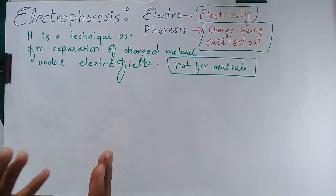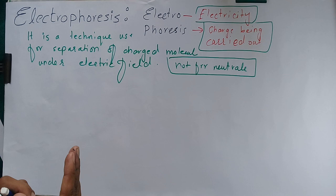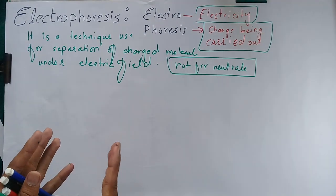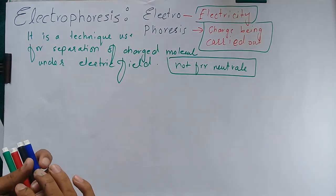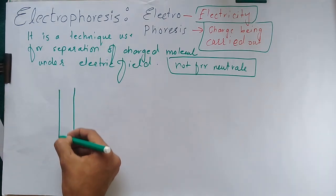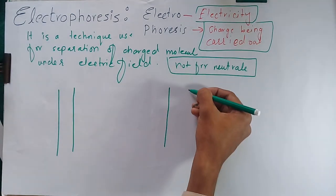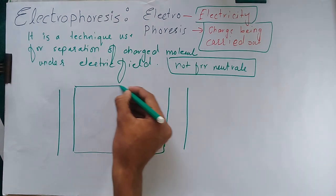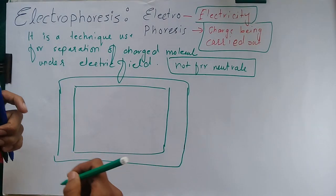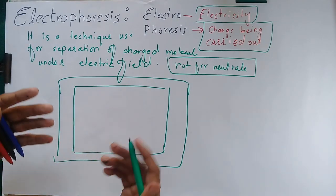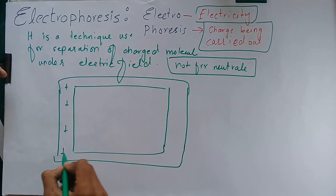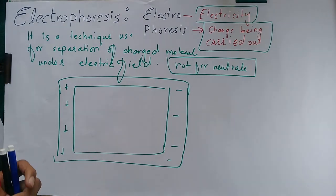Electrophoresis is a process in which we separate charged molecules under the electric field. Generally, electrophoresis uses a tray, and in this tray we have connected two electrodes — one is positive and the other is negative, one is anode and the other is cathode.